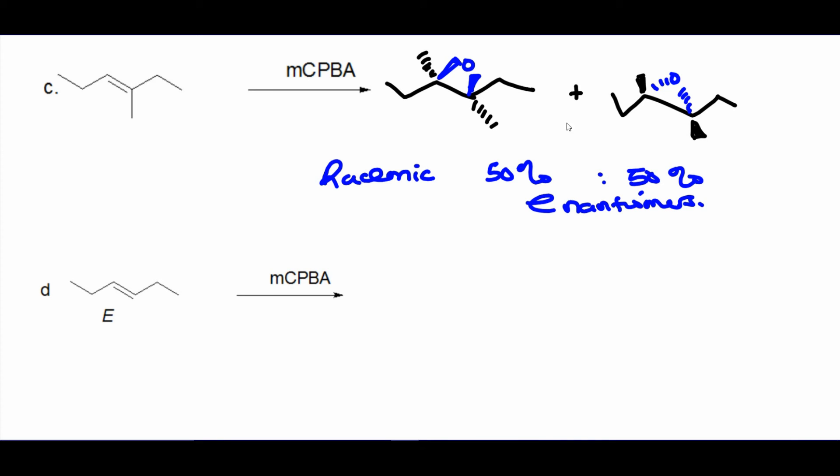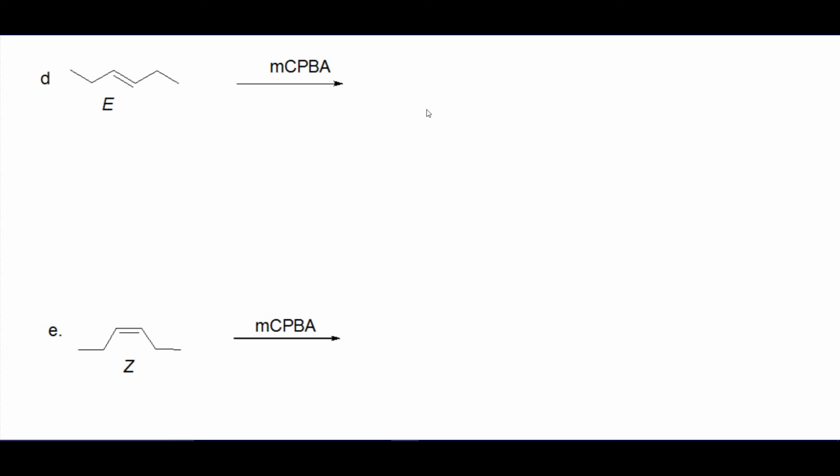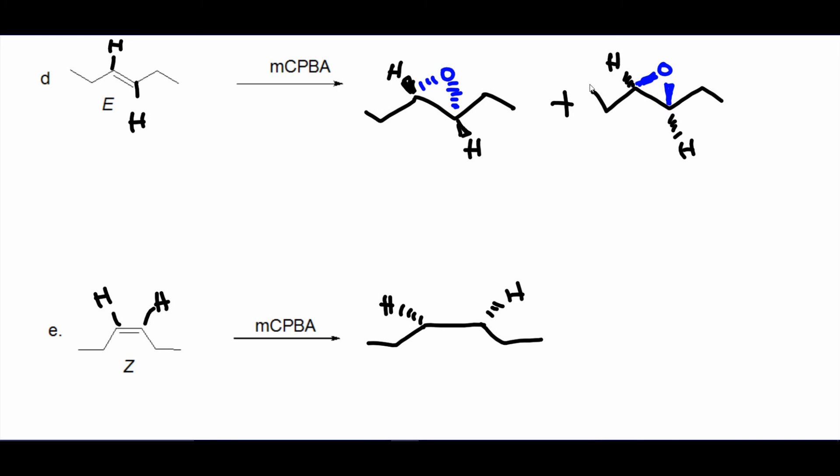For this one, adding the epoxide from the bottom to get this structure, flushing the pre-existing hydrogens on the top, or you're adding the epoxide from the top so you give it a wedge, pushing the hydrogens away.